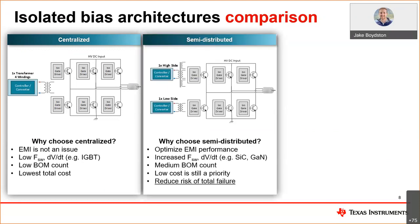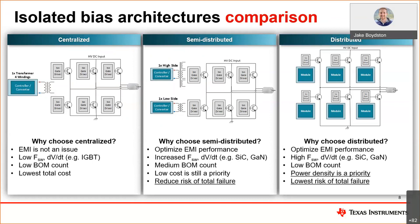The second architecture option is a semi-distributed approach, typically using one transformer to bias your three common ground low side drivers, and maybe one transformer to bias the three high side drivers separately with multiple windings. The semi-distributed architecture can enable higher performance for EMI and CMTI, or common mode transient immunity, but may involve a higher BOM count. The biggest point to note here is that you can reduce your risk of total inverter failure by up to 50%. The last approach would be a distributed architecture, which pairs bias supplies one-to-one with each gate driver. This approach will have the highest density and highest performance, and you can actually maintain a fairly low BOM count and get the highest reliability in the system at the same time.